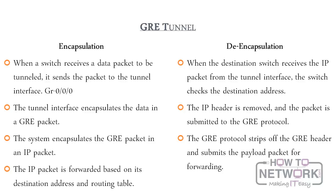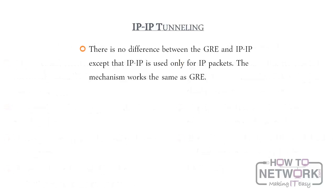GRE packets that are encapsulated in IP packets use IP protocol type 47. This is to ensure the inner IP packet is never modified except the TTL field. The TTL field must be decremented to ensure that the packet does not live forever. Here is an example of configuration output that shows a GRE tunnel interface as well as the static routing options to go with the tunnel.